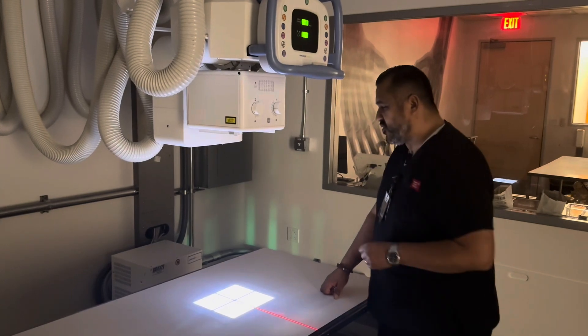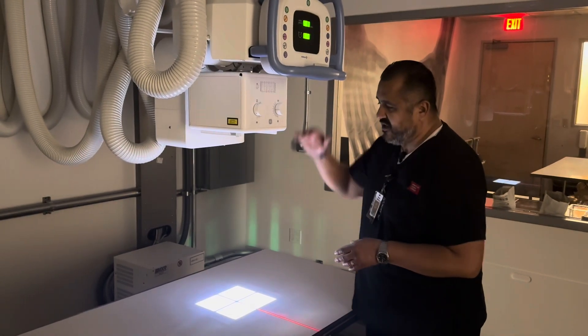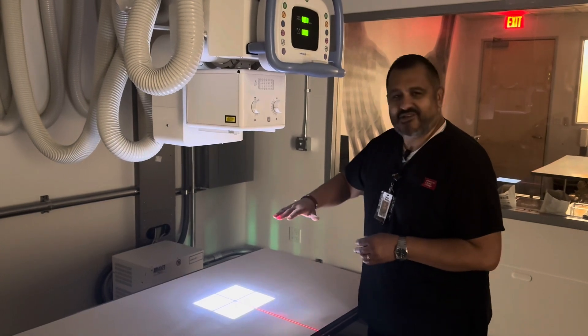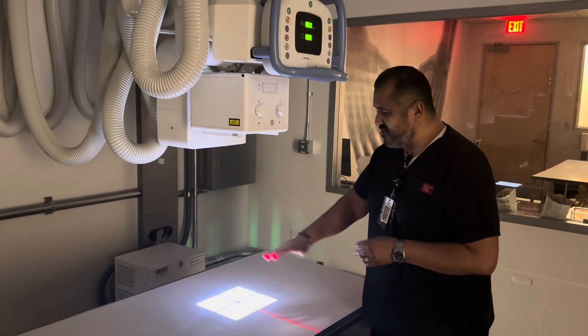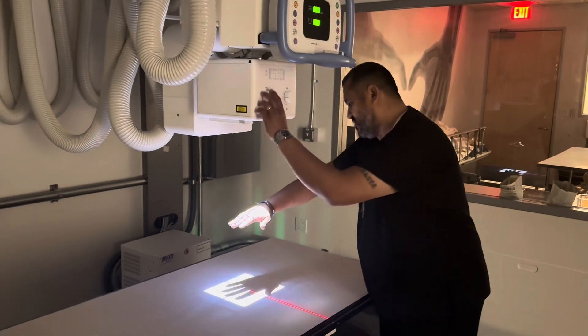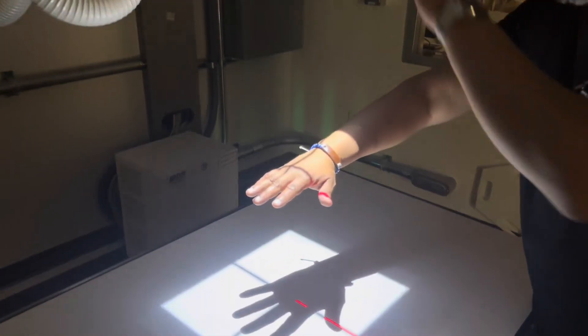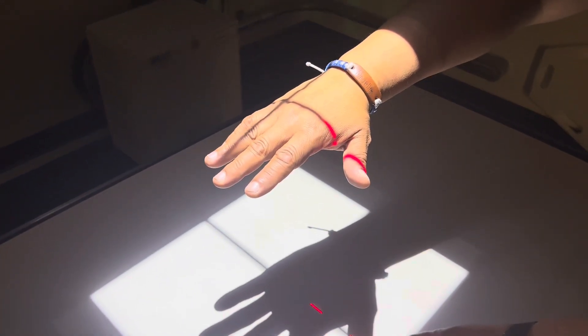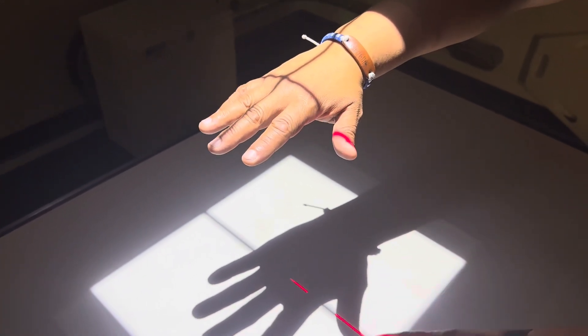Alright, so what we're going to show you really quick here is what happens when you increase your SID or decrease your SID and when you increase OID and decrease OID. So I'm going to show you with the shadow here. So I'm going to open up the collimation field here a bit bigger here. So this is OID, right? So if the image receptor was down here, right, I'm using the white table here just to show you a better example.